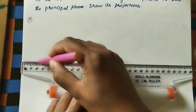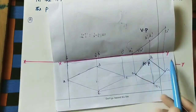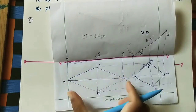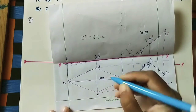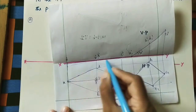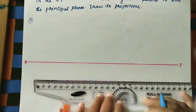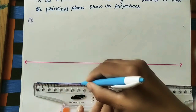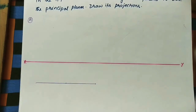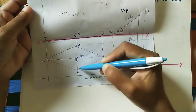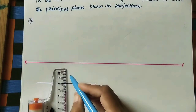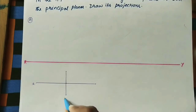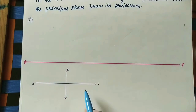Draw the XY line. The gap is not specified, so take any convenient gap. Draw the longer diagonal — 100 mm — parallel to the XY line. This is the reference. The shorter diagonal is 40 mm, so mark 20 mm on each side of the midpoint of the longer diagonal. Mark the endpoints A, B, C, D — always use small letters for the top view.